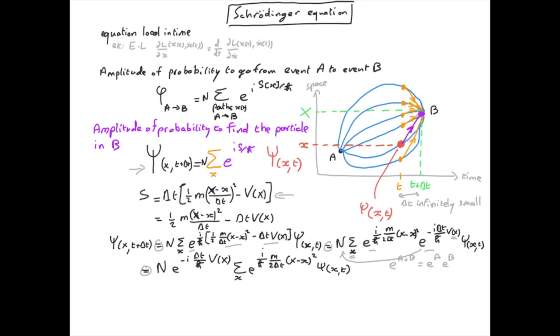It is now a good time to consider a change of variables. We will introduce xi as the difference between capital X and small x. Because the sum over x runs for all possible values of position, it doesn't matter if we sum over x or xi. We also need to change small x in the amplitude to capital X minus xi.